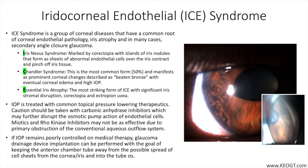This appearance has been linked to the replacement of normal corneal endothelial cells by cells with epithelium-like features that have lost hexagonality and appear to be migratory, with the ability to cross Schwalbe's line and spread over the trabecular meshwork and surface of the iris. These cells are not able to maintain the normal pumping mechanism provided by healthy corneal endothelial cells, which maintain corneal osmotic balance and clarity.